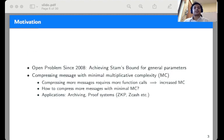Our work has both theoretical and practical motivations. Indeed, achieving Stam's bound for general parameters has been an open problem since 2008. From a practical perspective, the problem relates to minimizing multiplicative complexity. As more function calls implies increased multiplicative complexity. The natural question is how to compress more messages by making the same number of function calls and thus minimizing the multiplicative complexity.